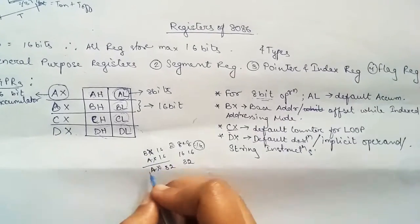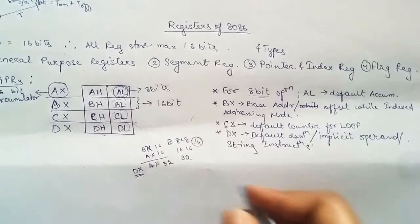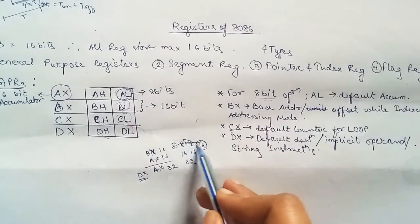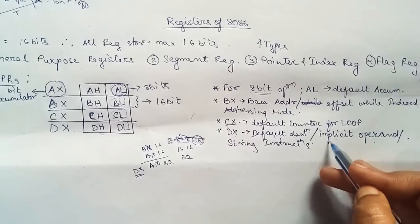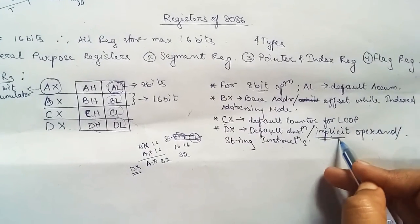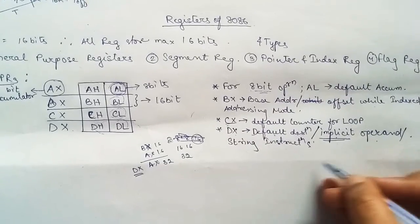The resultant will be stored in AX and the extra bits will be stored in DX. That is the default destination or implicit operands. Implicit means we do not have to specify the operand.